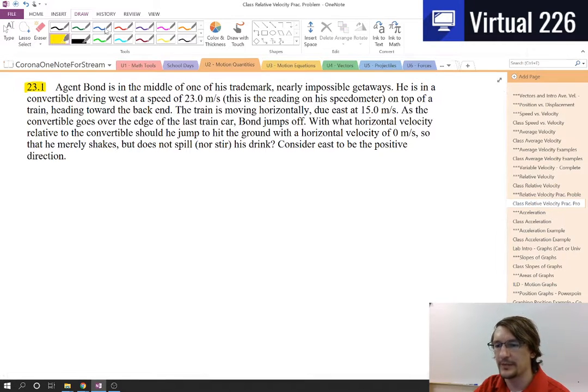And this is the 23.1. In this problem, what's going on is Bond is driving his Aston Martin convertible, but he's not just driving it on the road. He's driving it on top of a train.